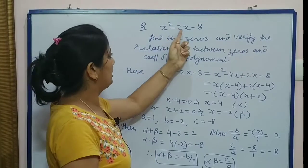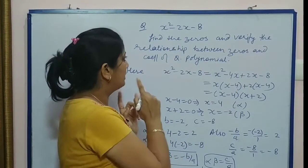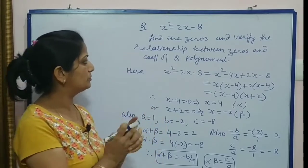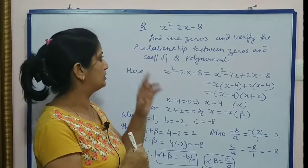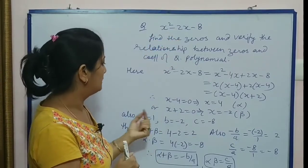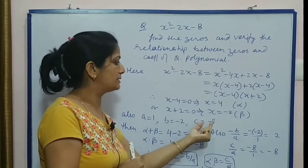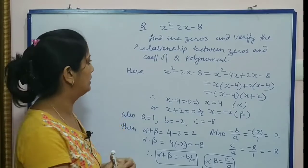So ek question dekhte: x² - 2x - 8. This is given polynomial. Find the zeros and verify the relationship between zeros and coefficient of quadratic polynomial. Here coefficients are 1, -2, and -8. That means a = 1, b = -2, and c = -8. These are coefficients of this quadratic polynomial.